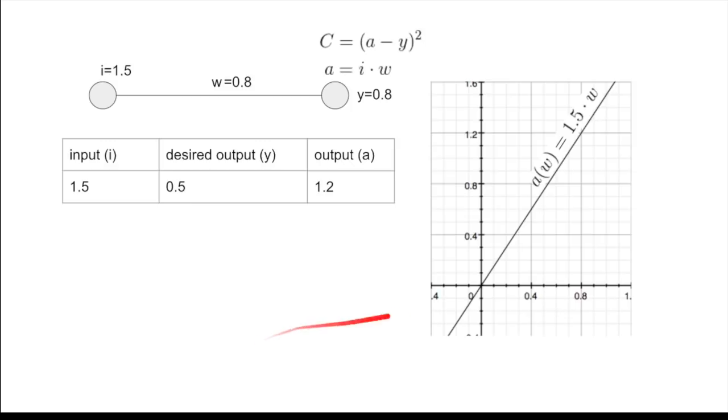Looking at the activation as a function of the weight, we can see that, whereas it is currently up here, in order to bring it down to where we want it to be, which is 0.5 for the activation, the weight has to be just above 0.3.